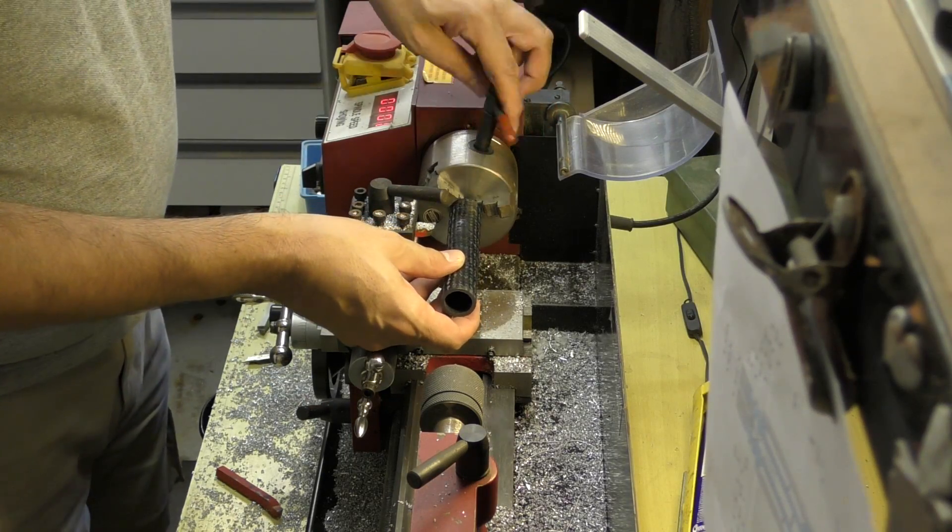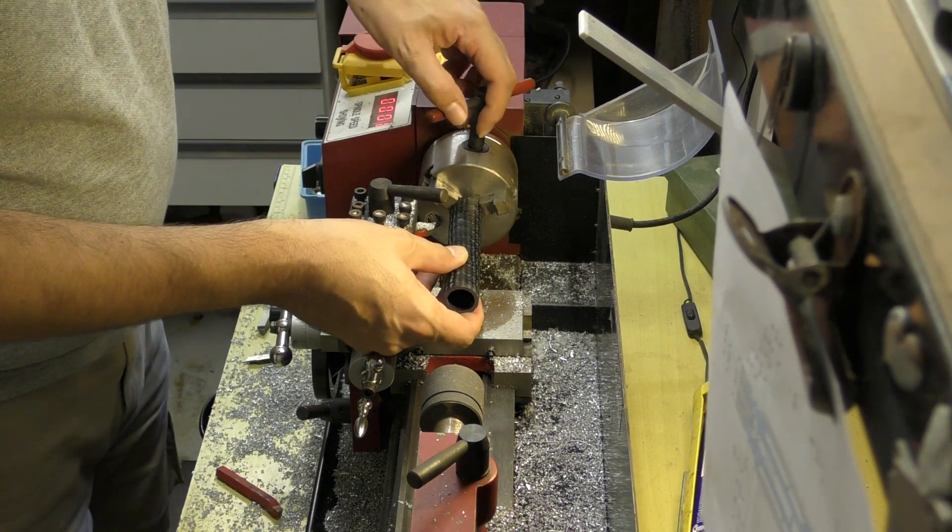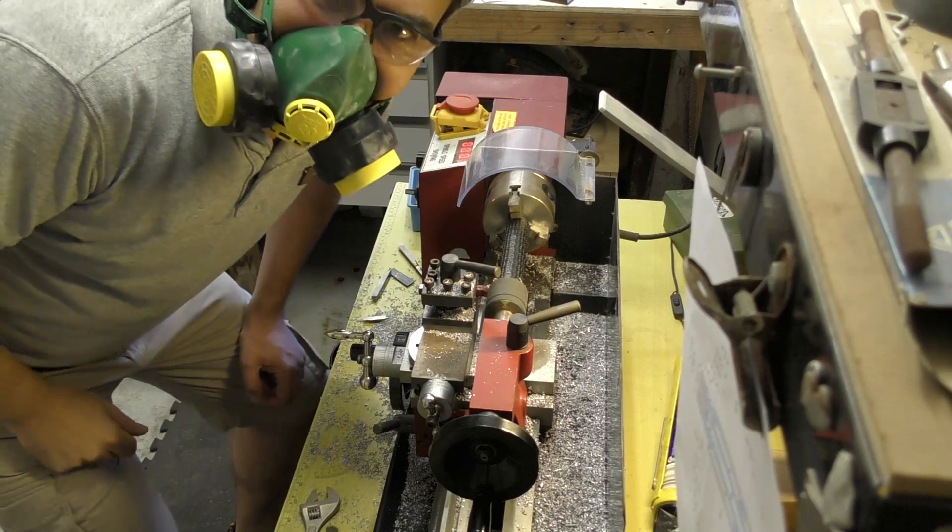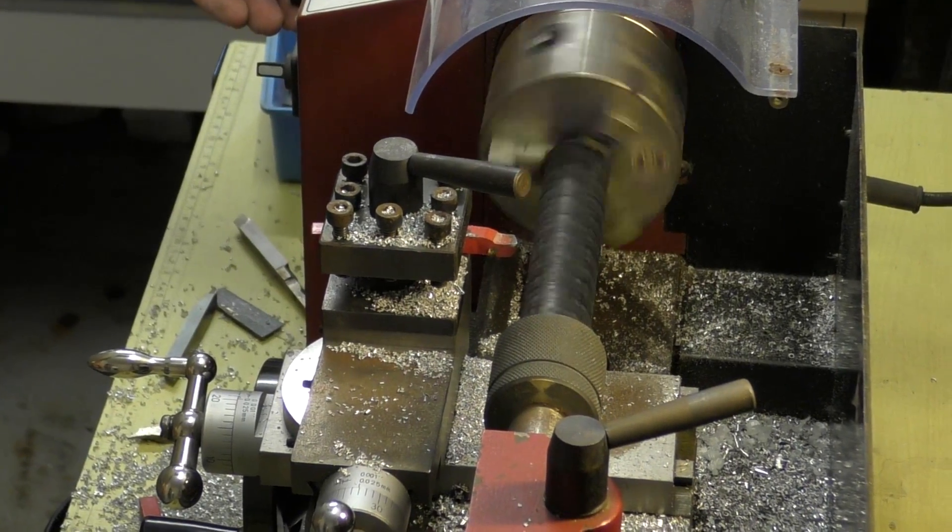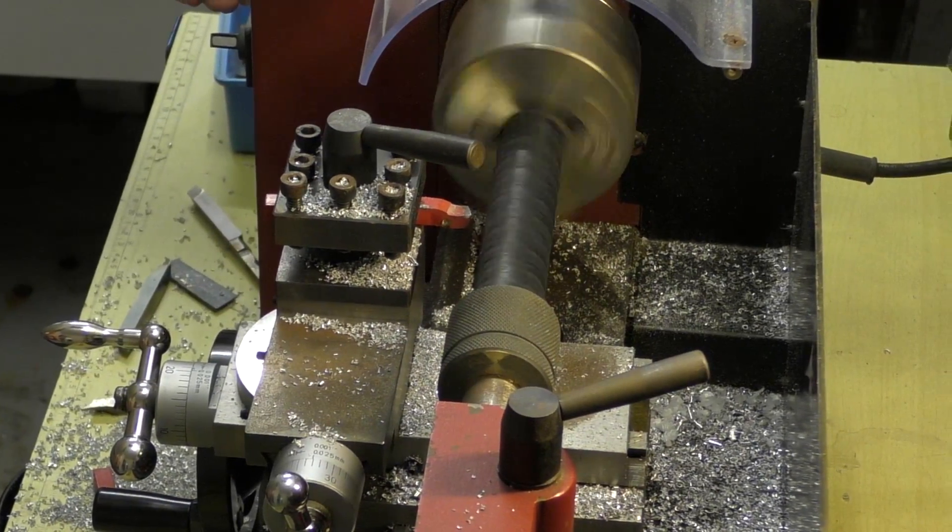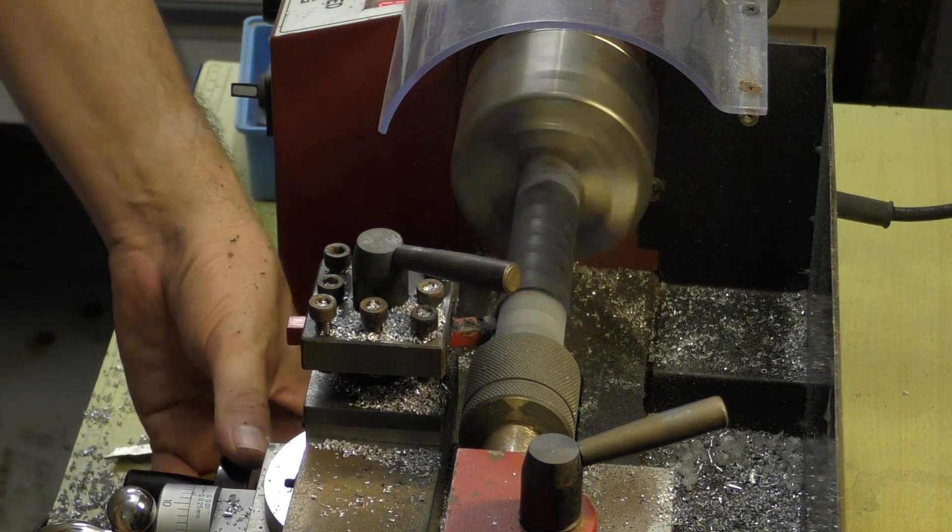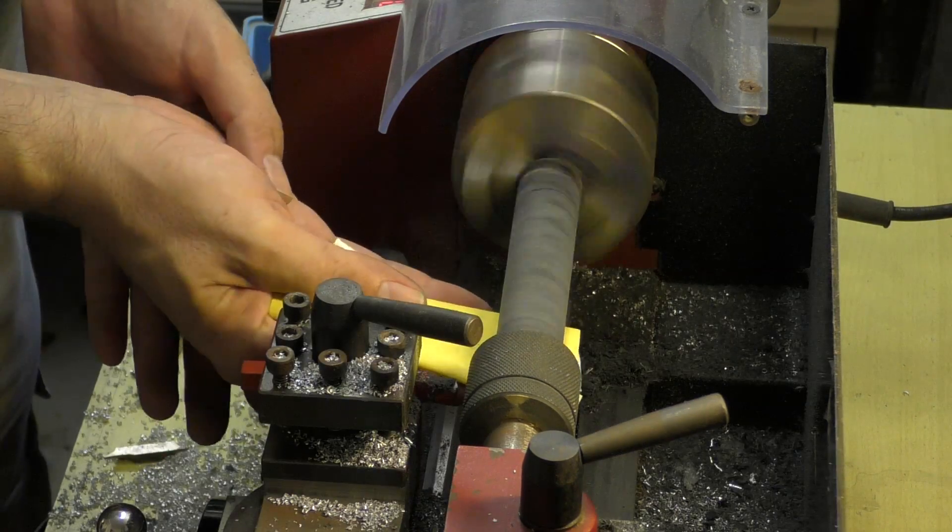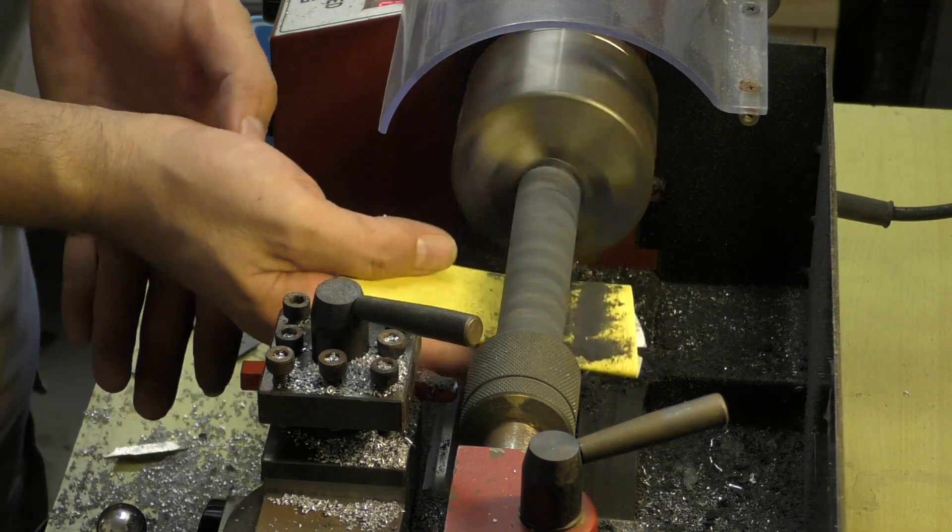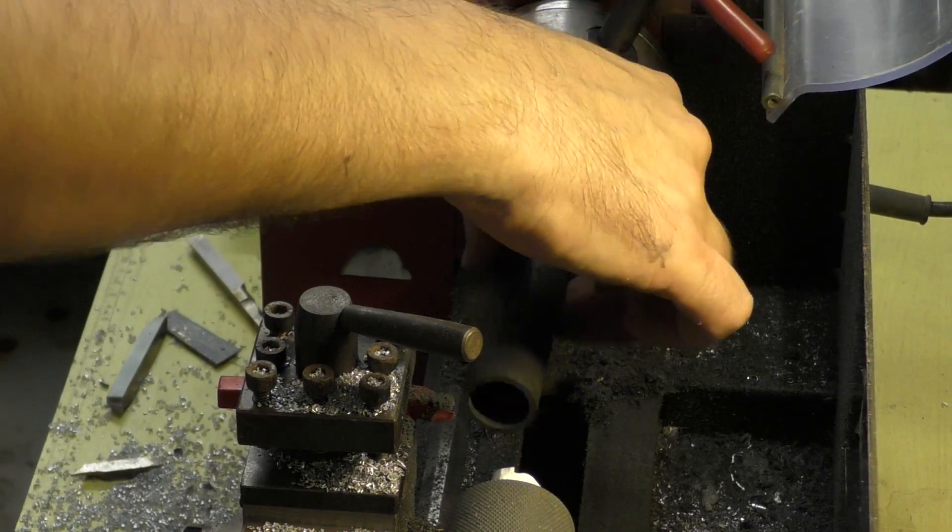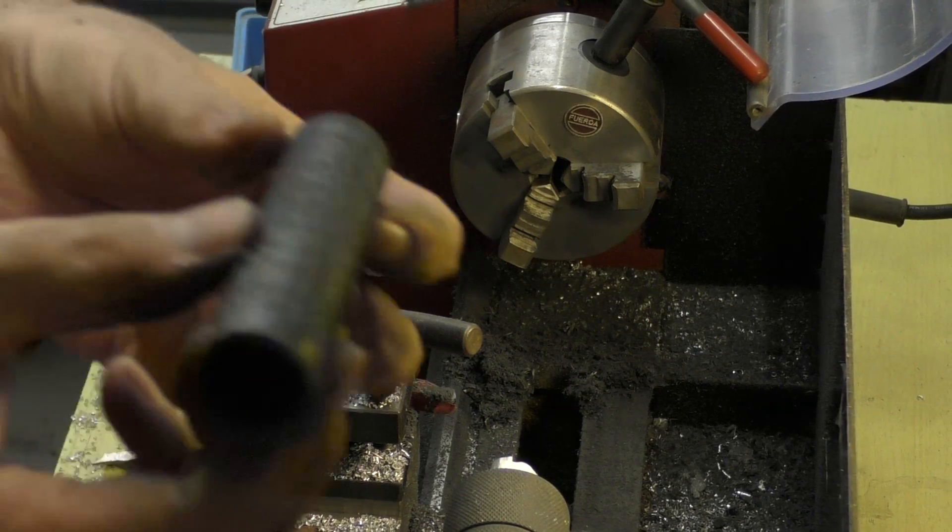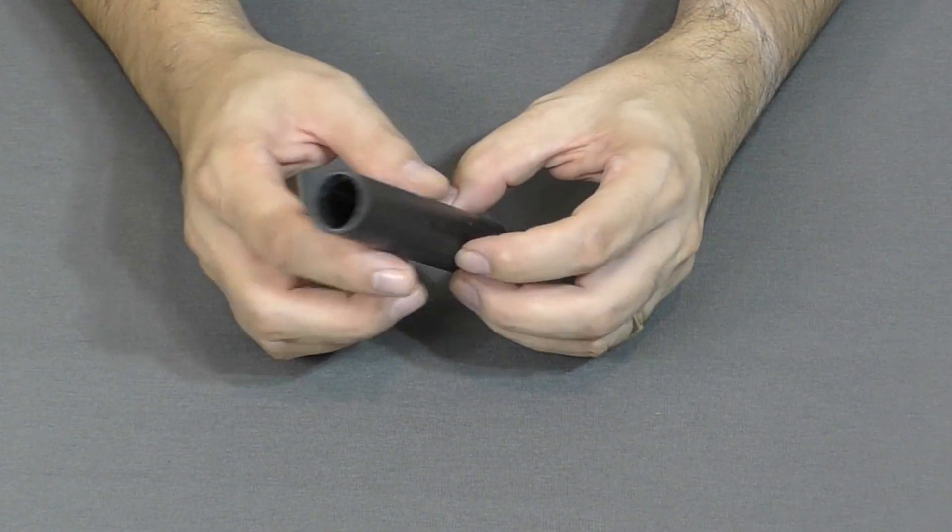It was then machined down on the lathe to the exact size. Machining carbon fiber is pretty messy, so we always wear a respirator for this. And here's the tube sanded and complete.